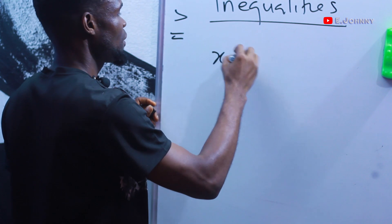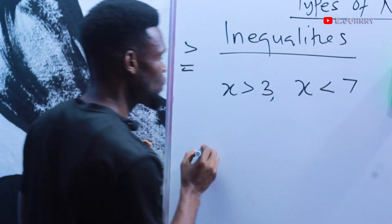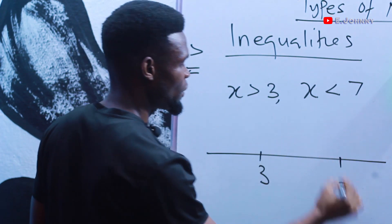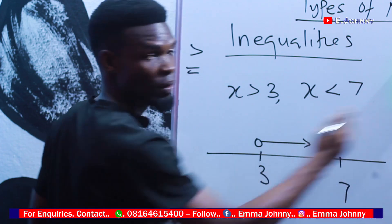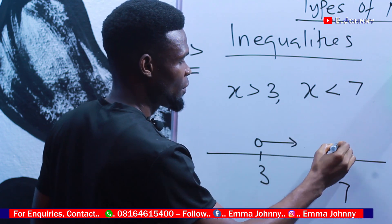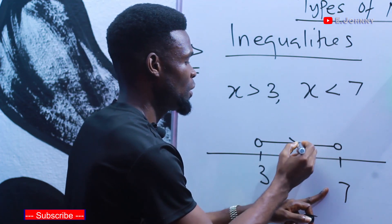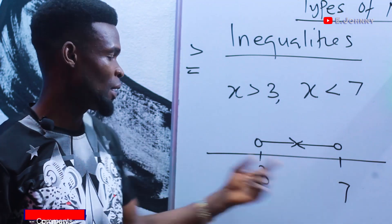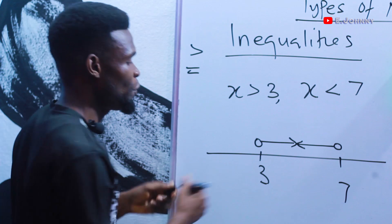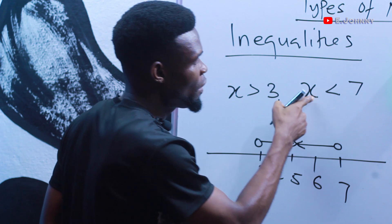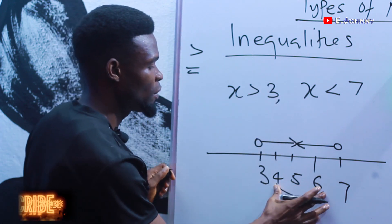Now if we have two inequality statements — x is greater than three and x is less than seven — we place both three and seven on the number line. The arrow from three goes right, and the arrow from seven goes left, overlapping in between. Since three is not inclusive, the first number we pick is four, then five, then six. Six is less than seven, so the set of values is {4, 5, 6}.